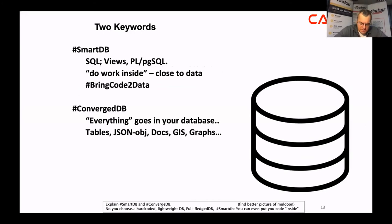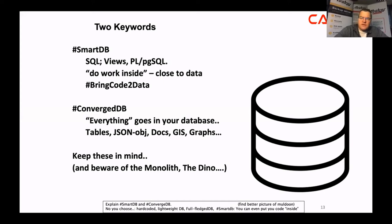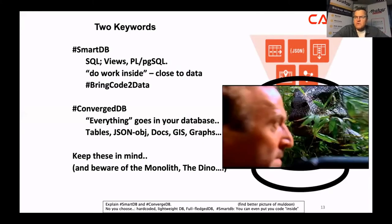Modern databases — I'm thinking of Postgres and Oracle — are very intelligent. They can do JSON, documents, geographical information, graph queries, and much more than just store a simple employee table. This is what I mean by bringing your code into the database. The database is smart and can do a lot of work you would normally code in Java. But beware — try not to create a monolith again. If you do, at least consult your architect, and call it a microservice — you'll be buzzword-compliant.